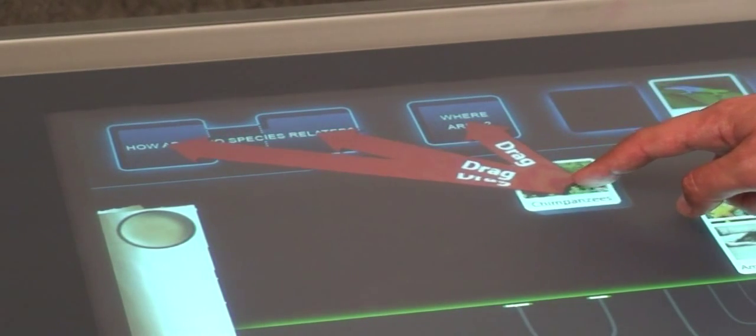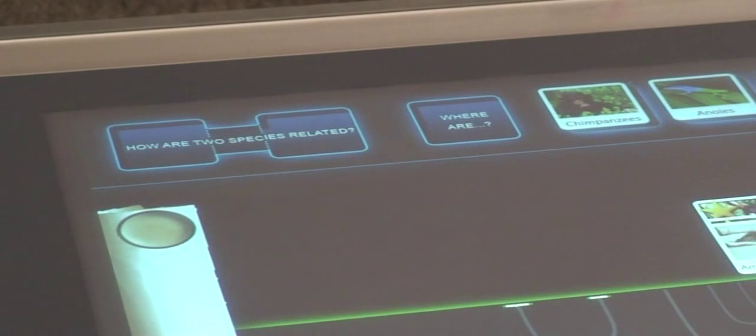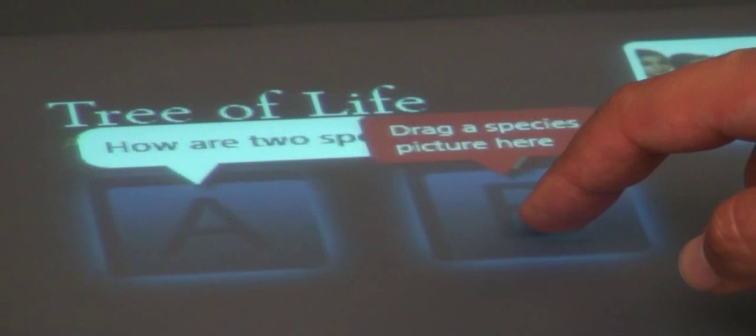In our exhibit, users can either find a species in the tree or learn about the relationships of two species. Docks also explain their meaning once tapped or touched.